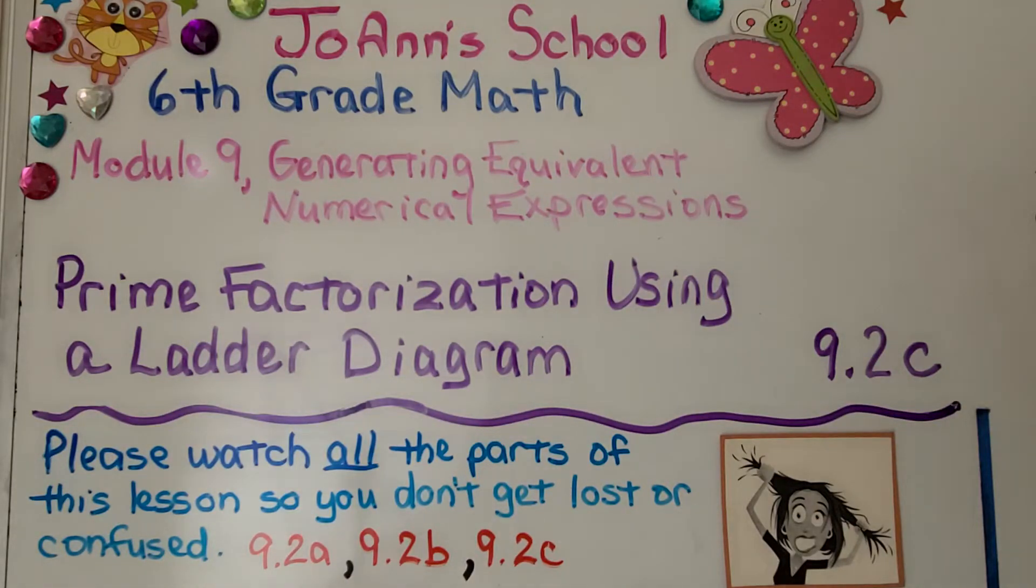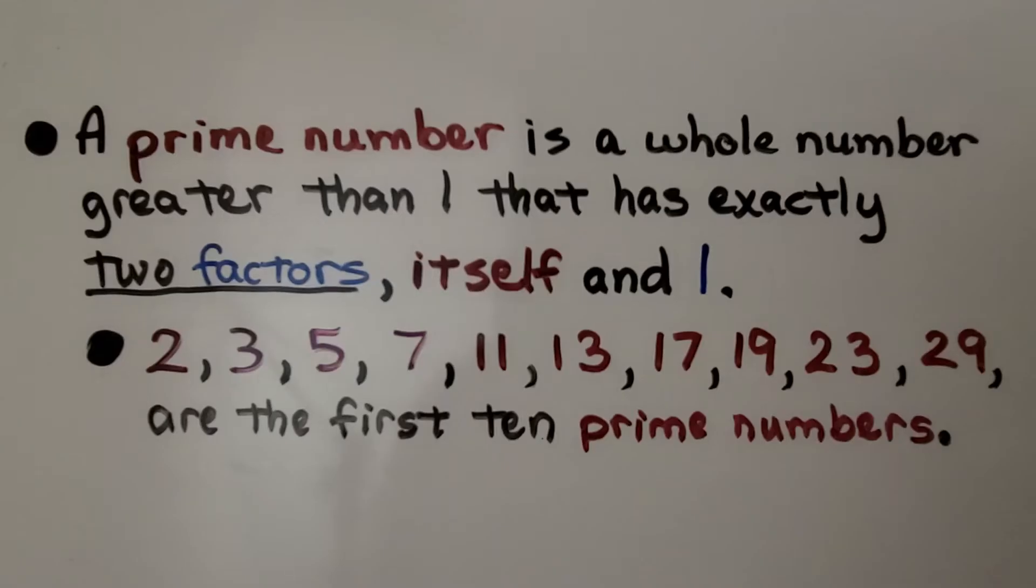Lesson 9.2c: Prime Factorization using a ladder diagram. Now we've learned that a prime number is a whole number greater than one that has exactly two factors, itself and one.